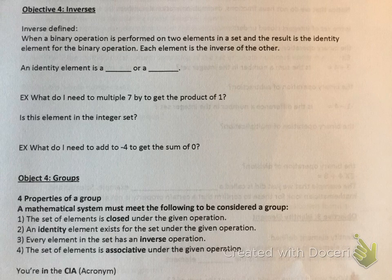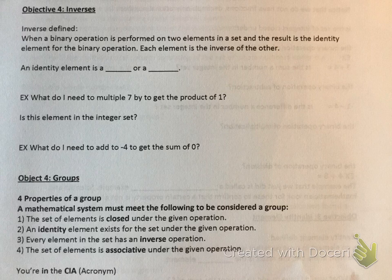This is 9.1 part 2, and we're looking at objective 4, that's where we left off, which is inverses. Inverse defined: when a binary operation is performed on two elements in a set and the result is the identity element for the binary operation, each element is the inverse of the other. The two we're going to be looking at are the additive inverse and the multiplicative inverse.